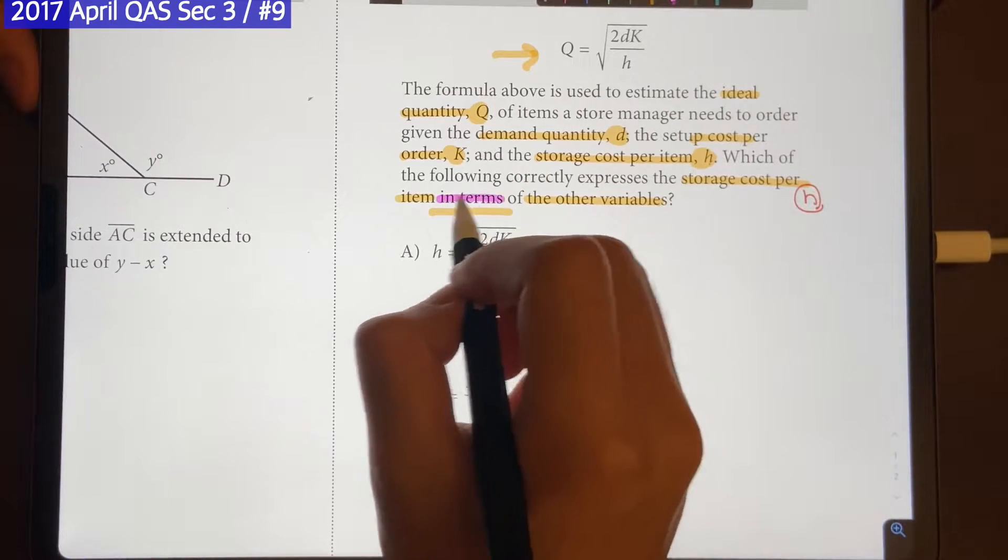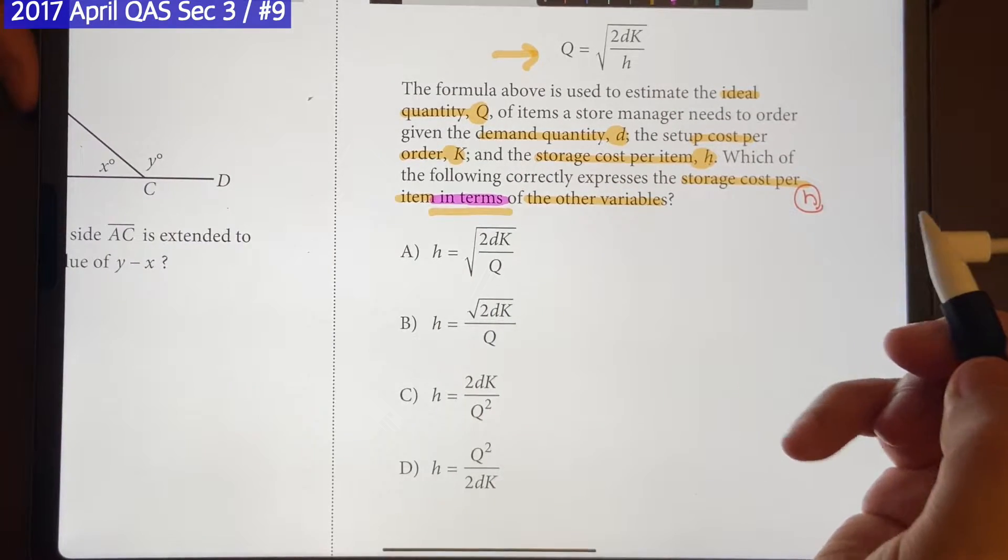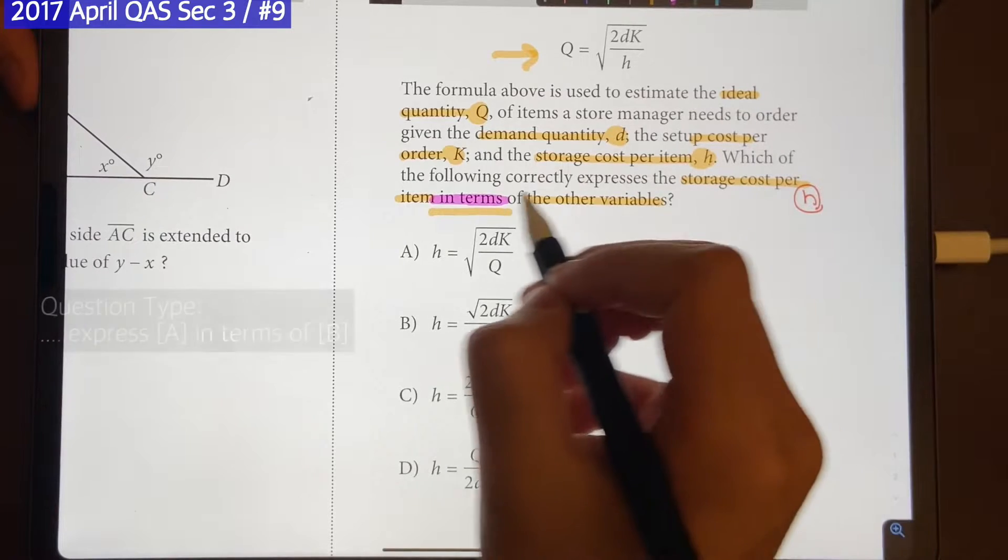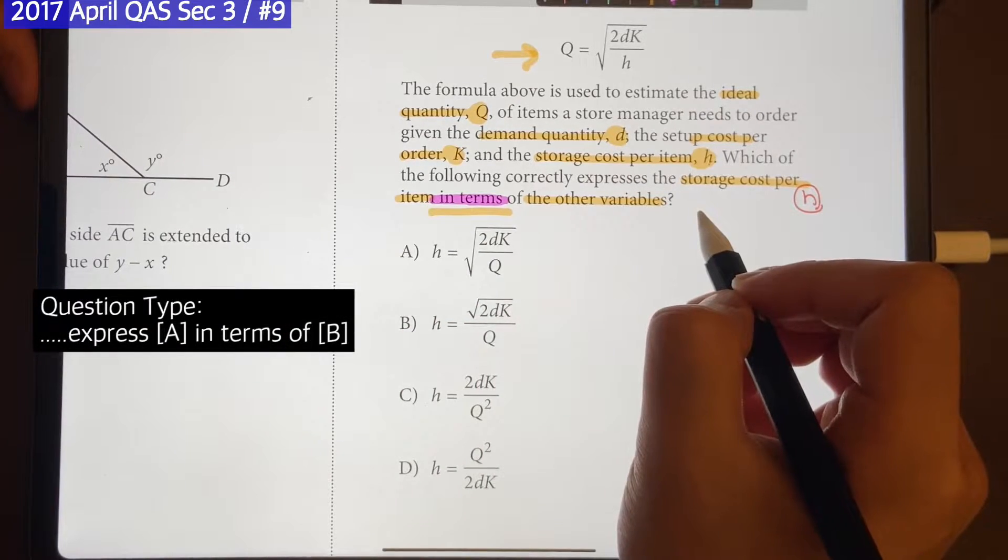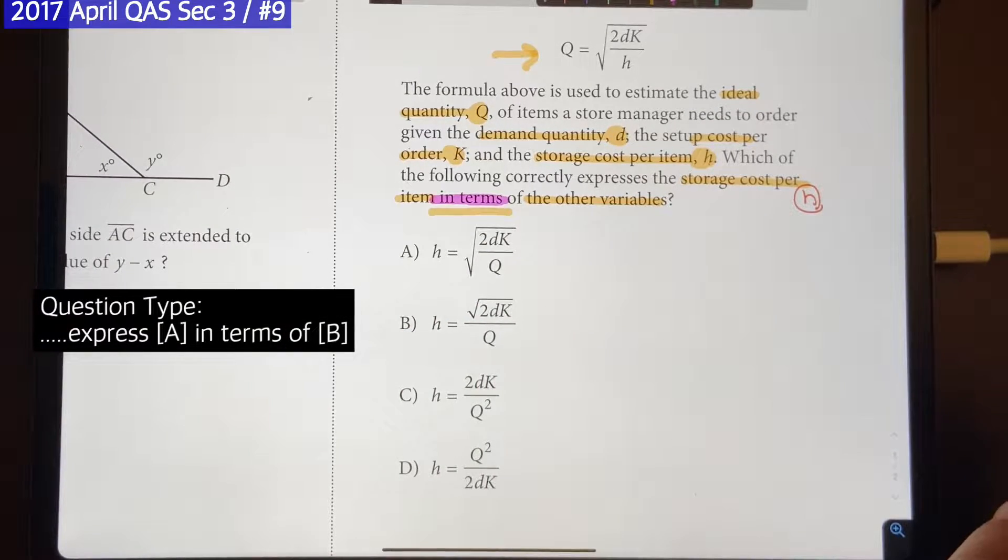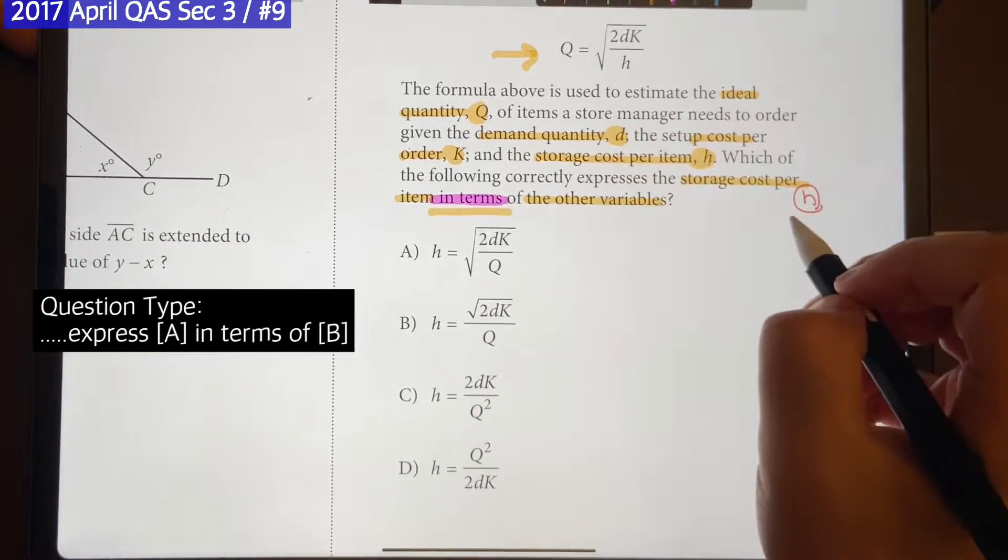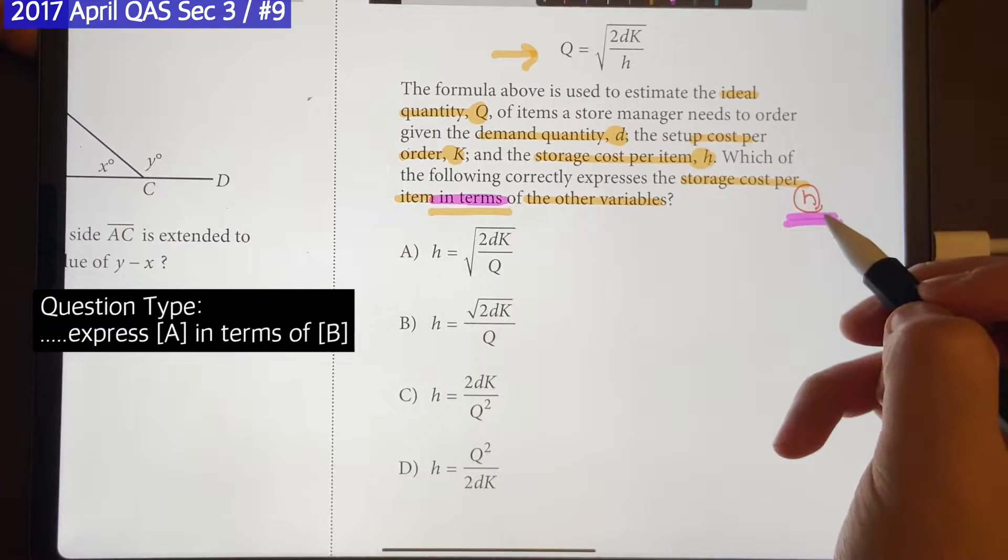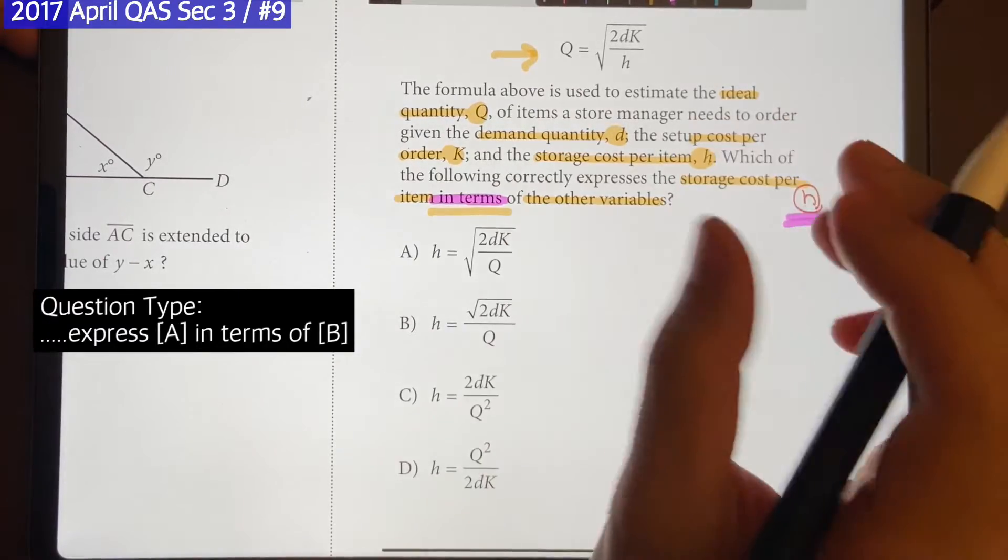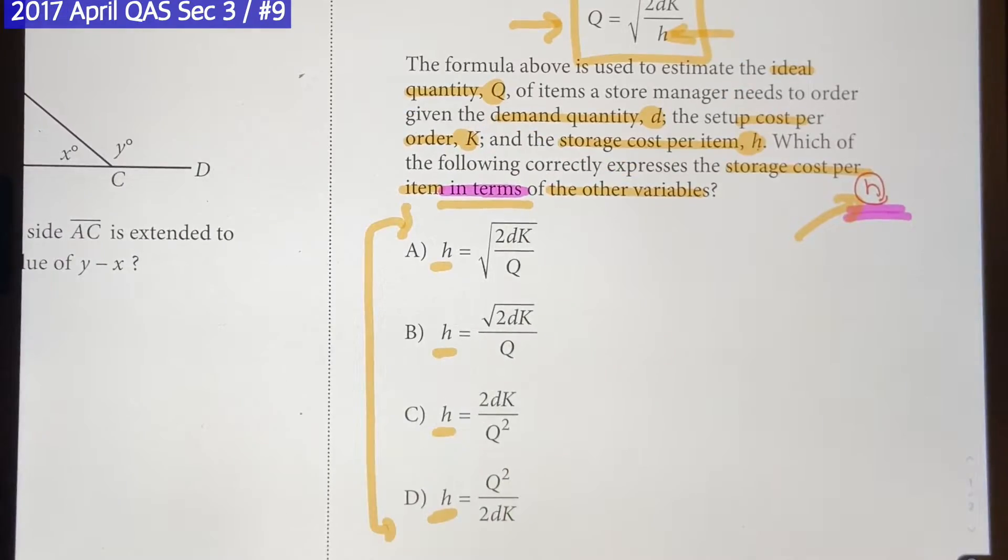You're going to remember that we have seen this type of question a lot. They want you to express something in terms of the other thing. What are we supposed to do here? It's actually really simple. All you have to do is isolate the first term all by itself. Whatever they mentioned first, you have to isolate it by itself.